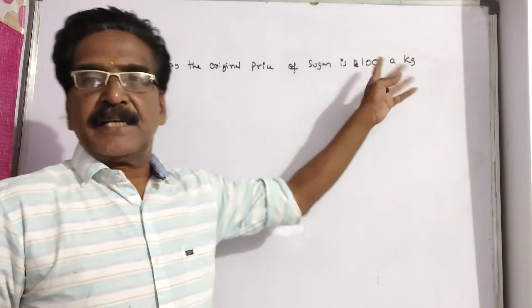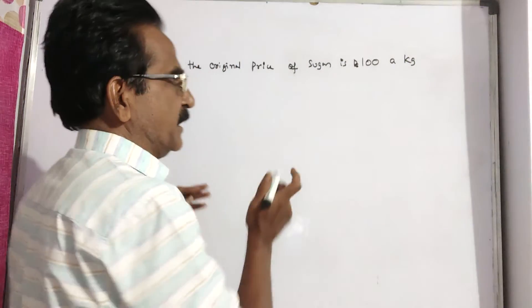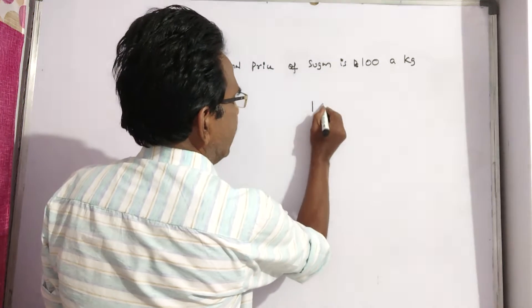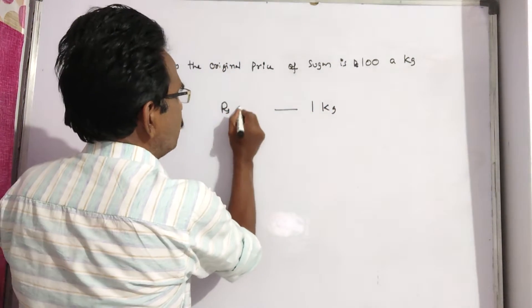Say the original price of sugar is 100 rupees a kg. Now the price of sugar is increased by 32 percent. That means 1 kg of sugar is now rupees 132.